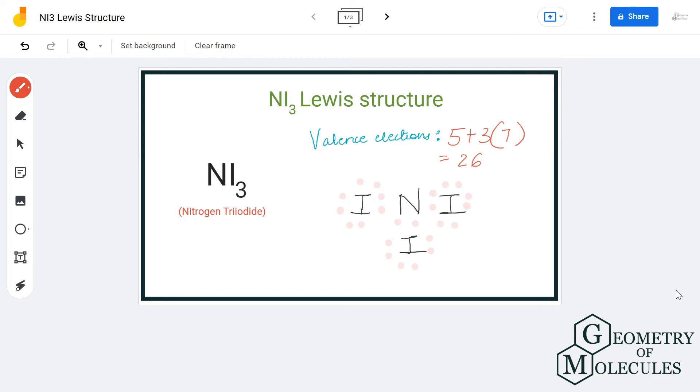Doing that we will be using up 18 out of 20 valence electrons, and the remaining two valence electrons will be placed on the nitrogen atom so that even the nitrogen atom can have a complete octet. And now this is it - this is the Lewis structure for NI3, in which nitrogen atom forms single bonds with three iodine atoms.